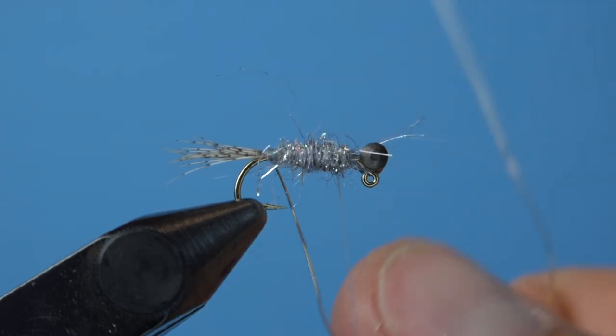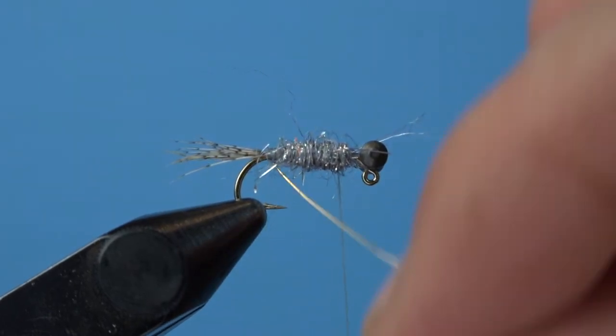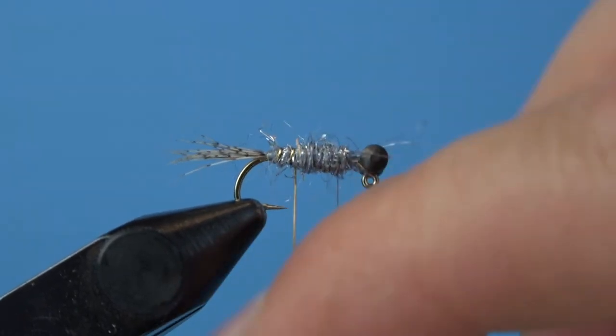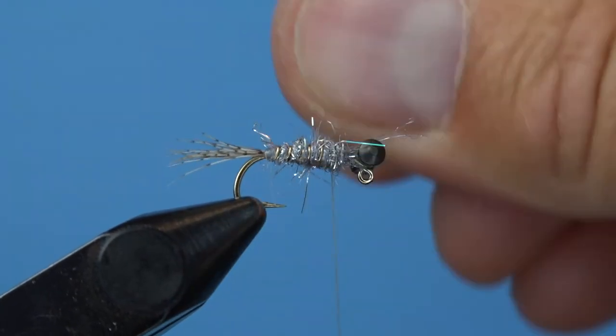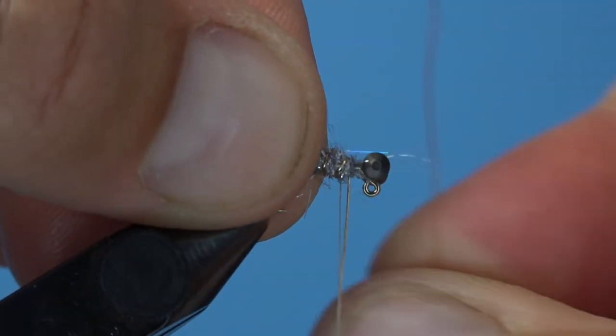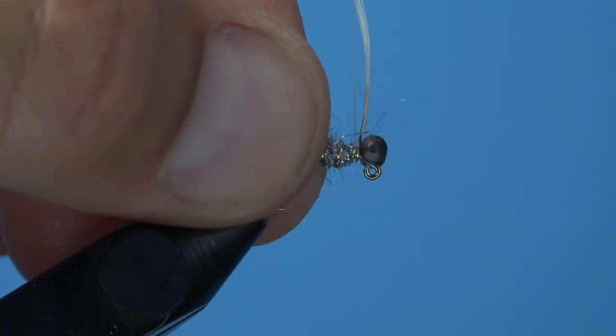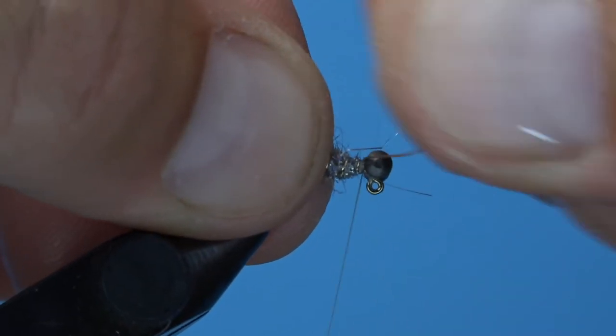Next use spiral wraps to bring that gold wire forward to the same tie-in point. This will add a slight ribbing effect, a little bit of flash, and a lot of security. Capture the copper wire at the front of the hook and then helicopter off any excess.